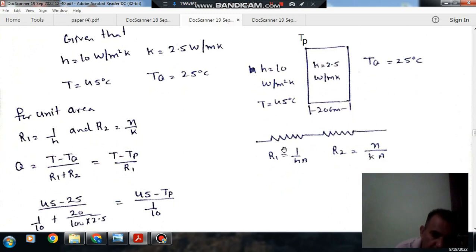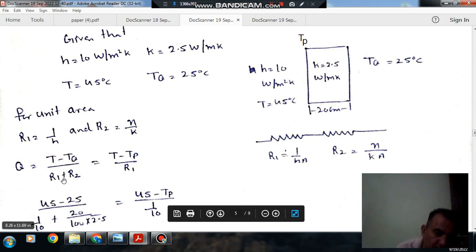Since A is 1, R1 becomes 1 by H and R2 becomes X by K. The heat transfer rate is T minus TQ divided by summation of resistances R1 plus R2.